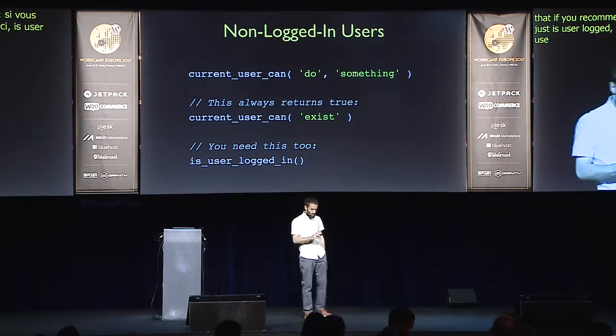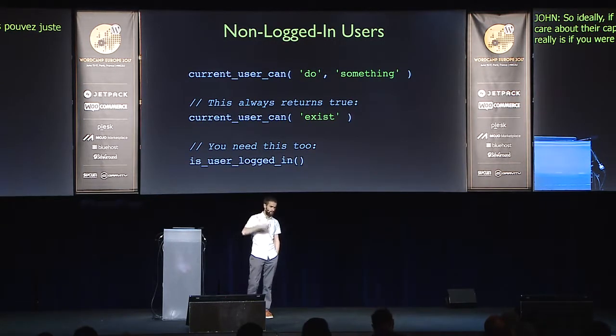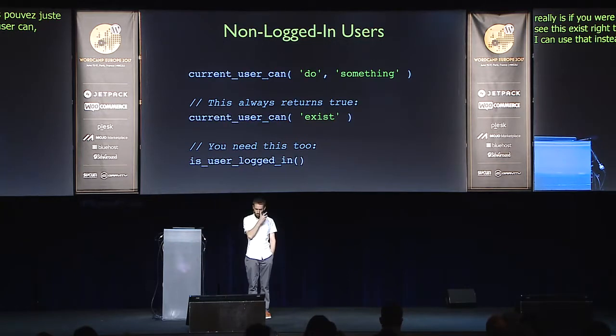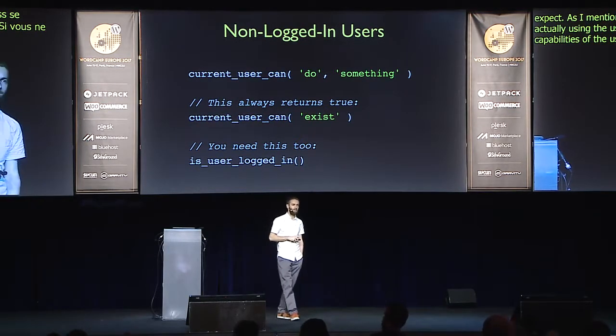Q: Could you go back to the slide with currentUserCan? My question is whether you recommend not relying on is_user_logged_in and instead using currentUserCan? A: Ideally, if you just need to know that a user is logged in and don't care about their capabilities, you can just use is_user_logged_in. The point is that inside currentUserCan there's 'exist' as one of the first lines of code — you might think you can use that instead of is_user_logged_in, but it doesn't quite work as expected. BuddyPress has some strange behavior around the exist capability. If you don't care about capabilities and just need to know they're logged in, use is_user_logged_in and forget about exist altogether.